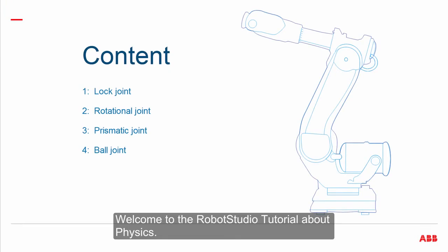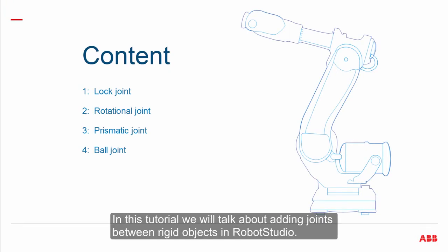Welcome to the Robot Studio tutorial about physics. In this tutorial we will talk about adding joints between rigid objects in Robot Studio.